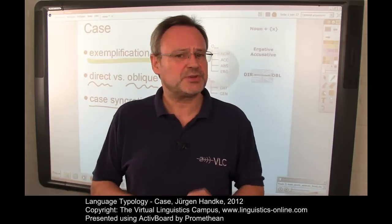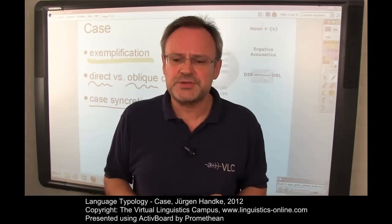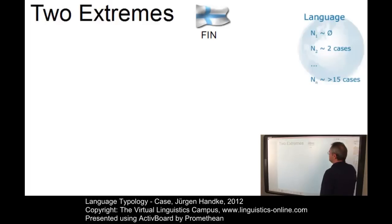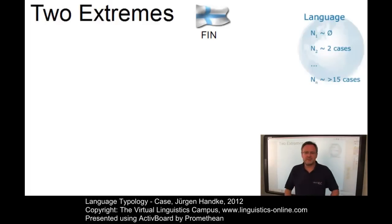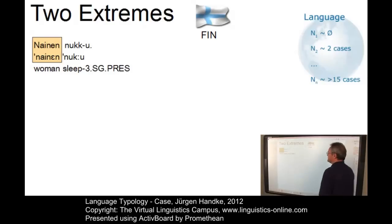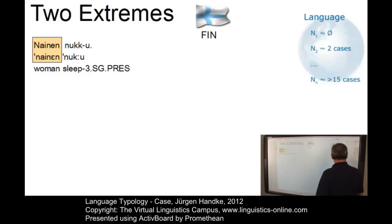Let us illustrate this on the basis of the morphosyntactic part of some entries from the VLC language index. At one extreme, we have languages such as Finnish, a Uralic language, which is well known for its elaborate case system. Here are our examples. The first sentence: the woman is sleeping — Nainen nukkuu — and we are interested in the form of the item 'woman'.